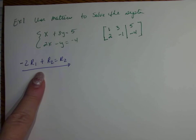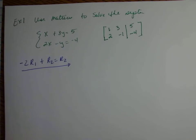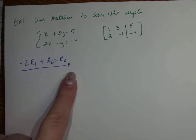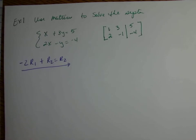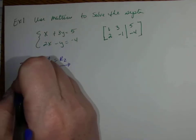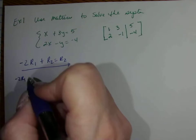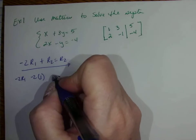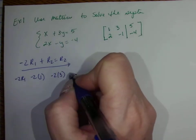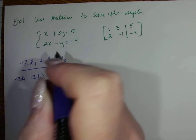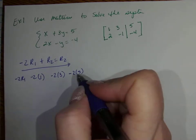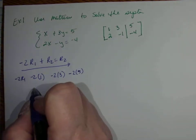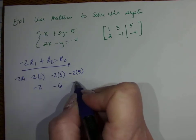This is similar notation to what we used with systems of linear equations. Negative 2 times row 1 means I take negative 2 times each term: negative 2 times 1, negative 2 times 3, and negative 2 times 5 — giving me negative 2, negative 6, and negative 10.